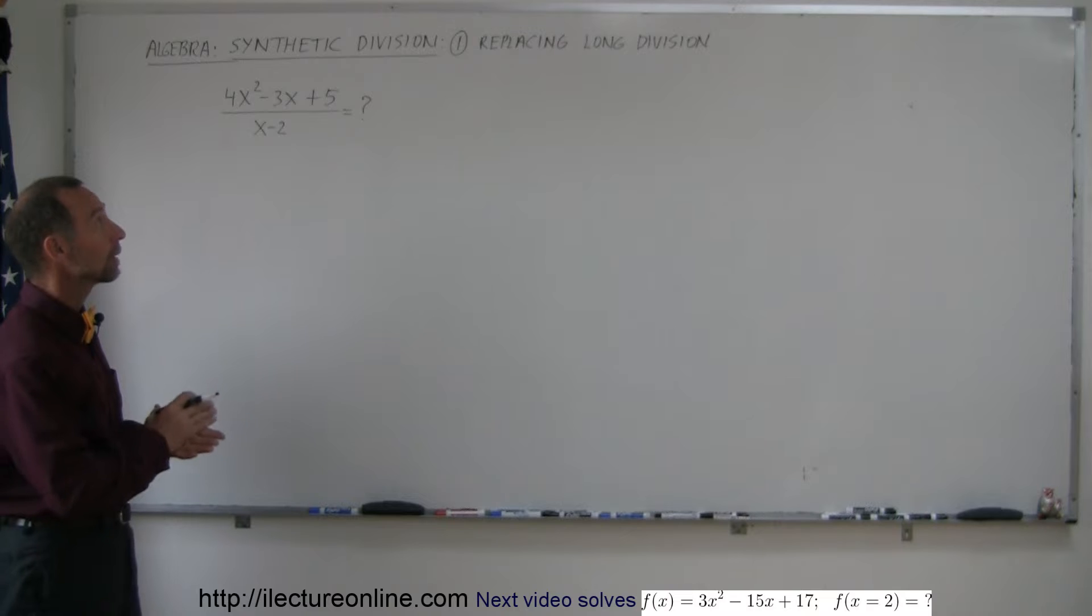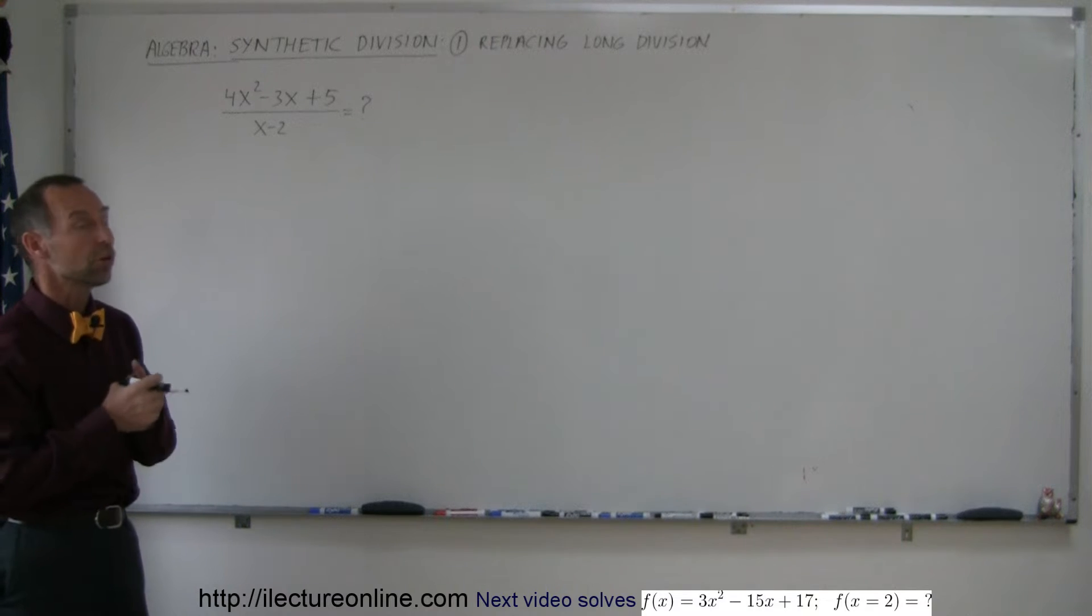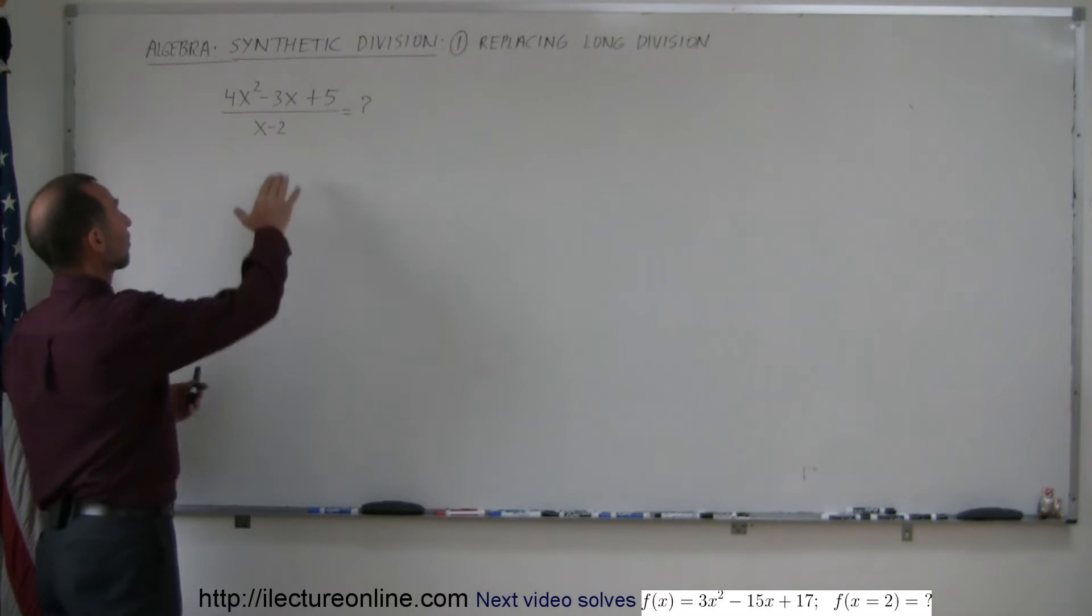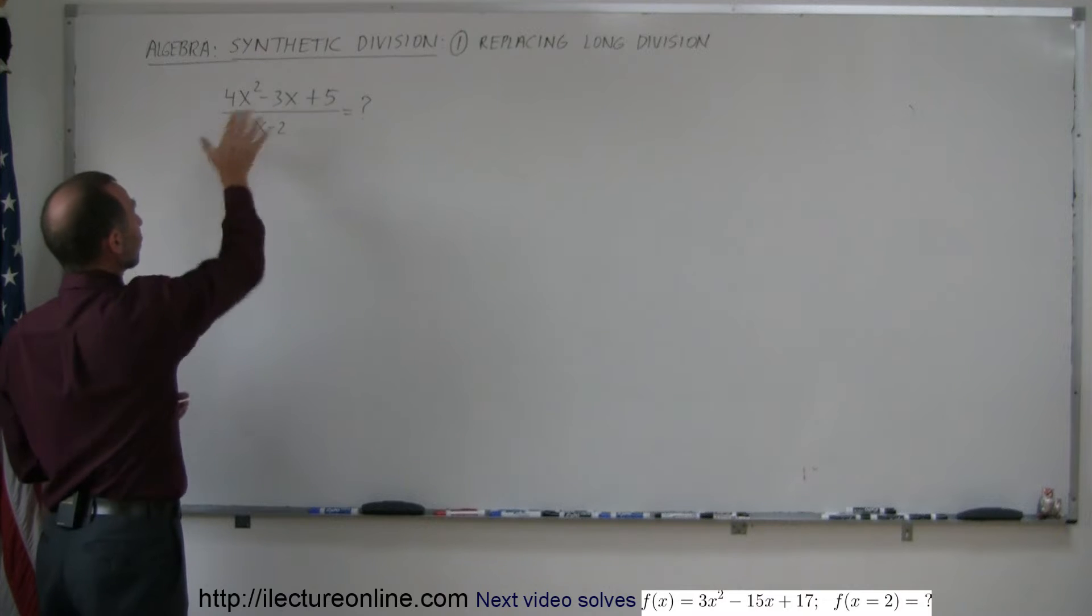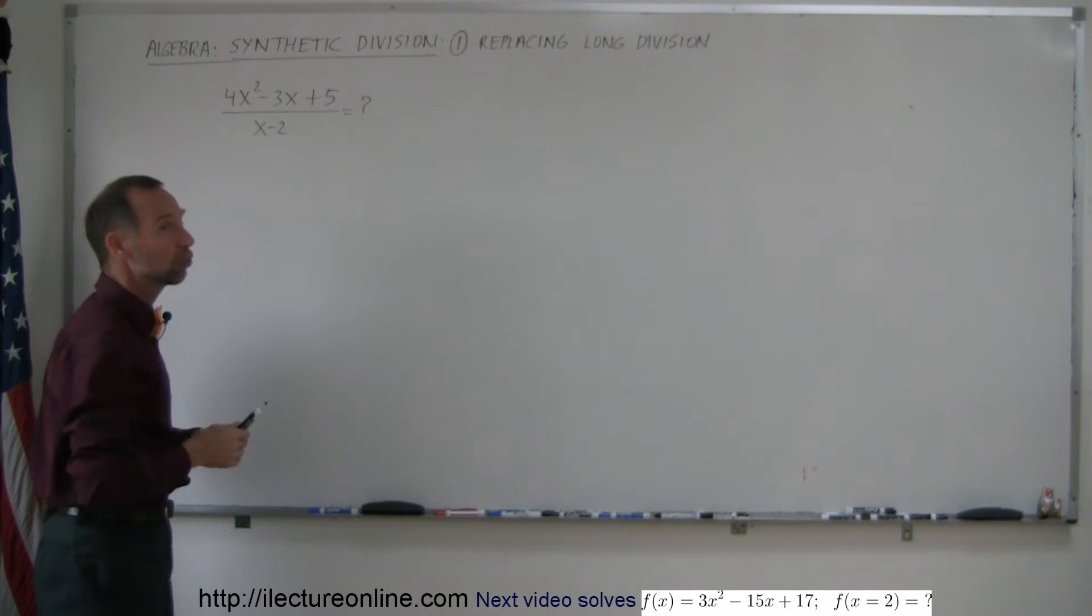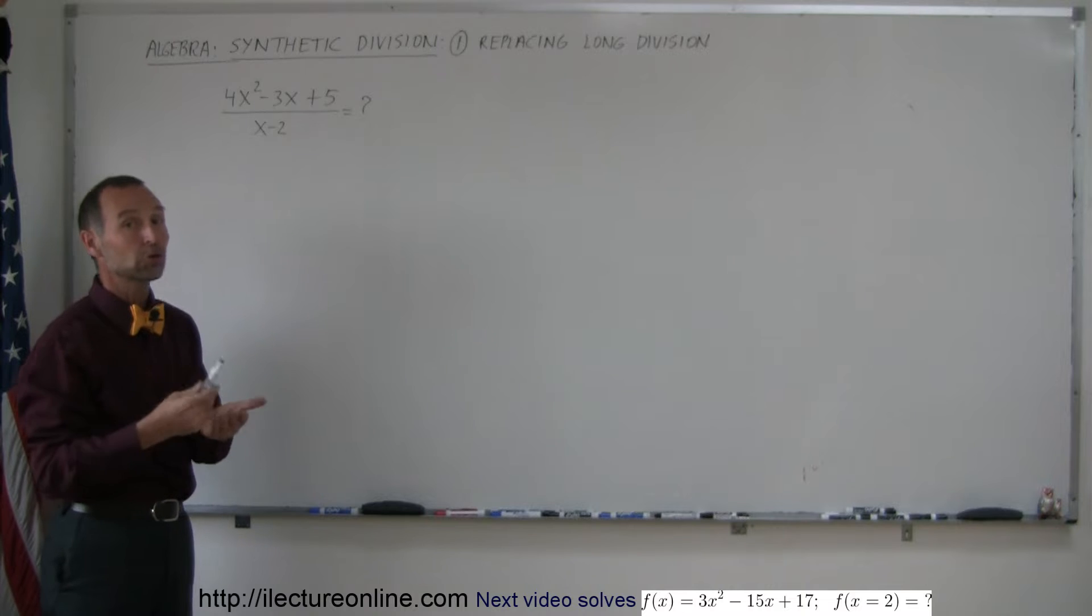The first thing we're going to talk about is how we can replace what we normally do as long division. For example, if we have something like this, we have a polynomial to the second power and we're supposed to divide it by x minus 2. How do we normally do that if we use long division?